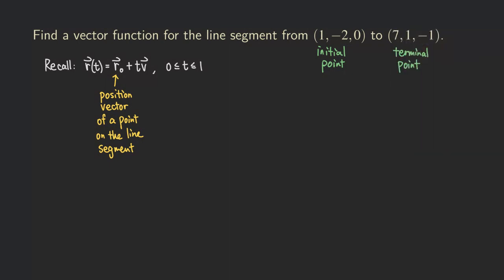One more thing we need to specify is V. What is V? V is actually the direction vector — the vector that is parallel to the line segment we are trying to find. This direction vector can be found by taking the terminal point and subtracting the initial point, so that we get a direction vector for the line segment we are trying to determine.